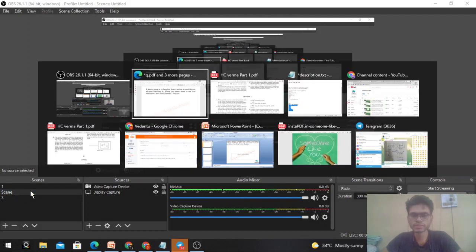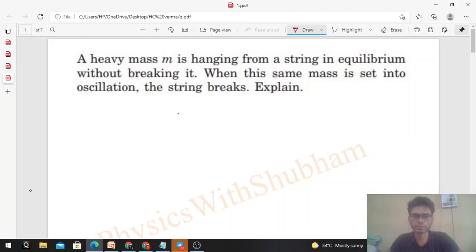Okay, hi everyone. So today let's discuss this interesting problem from H.C. Verma. What it says: a heavy mass m is hanging from a string in equilibrium without breaking it. When this same mass is set into oscillation, the string breaks. Explain.